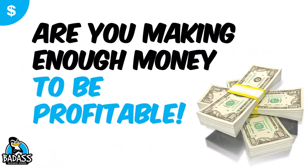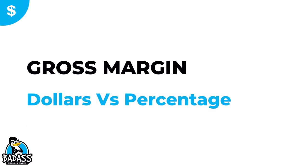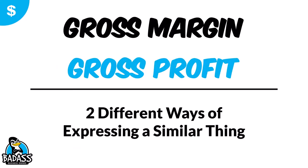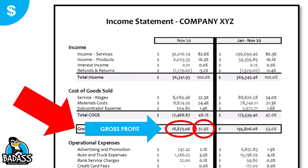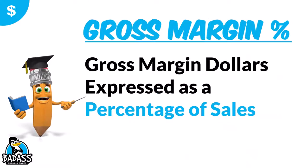The big question your gross margin answers is: are you going to be profitable? Now, gross margin and gross profit are just two different ways of expressing a similar thing. The first number is your gross profit expressed as dollars — for example, $18,000 is the gross profit this business is making. That percentage over here is what gross margin technically is — the percentage, not the dollars. People hear gross profit and gross margin and think they're two different things, but they're really the same thing: one expressed as dollars, one expressed as a percentage of sales.